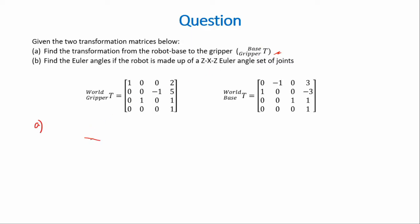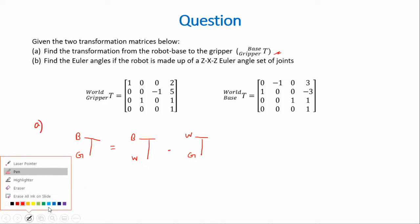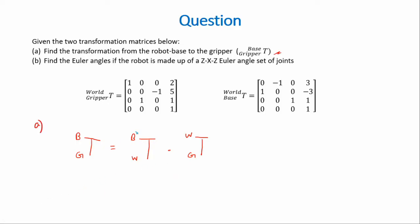So I can write that in a shorthand notation with G for gripper and B for base. And this would be equal to the transformation matrix of the base with the world, which is the intermediate frame, into the transformation matrix with the world and the gripper. So what you can see from here is that the frame over here should match the frame here, and the frame here should match the frame here.